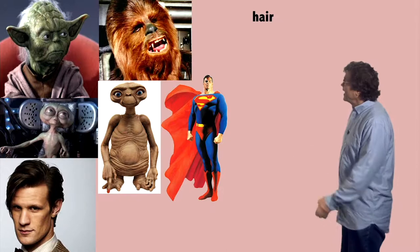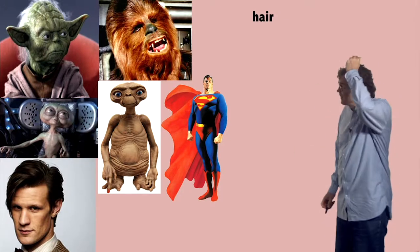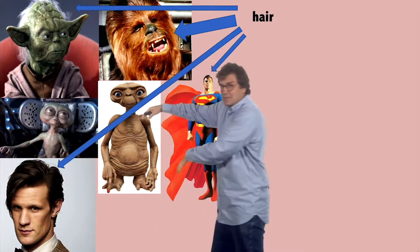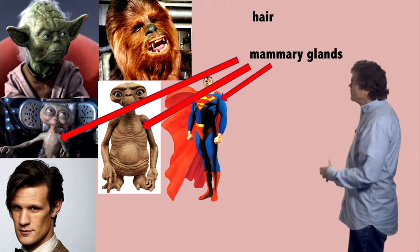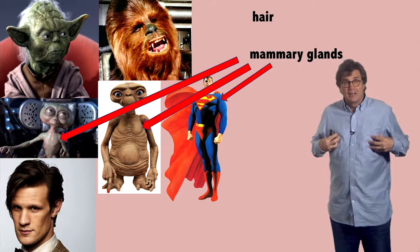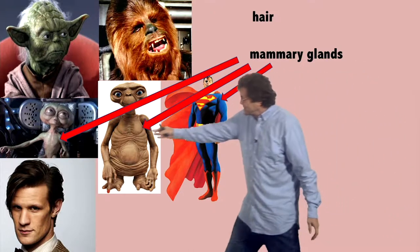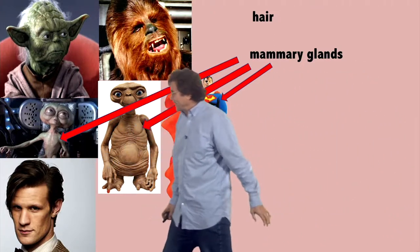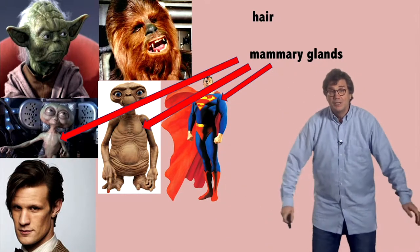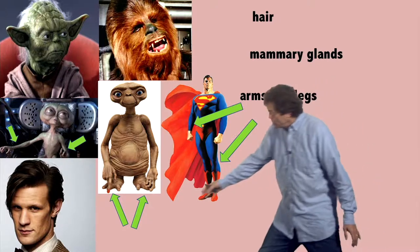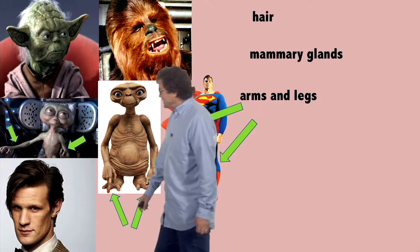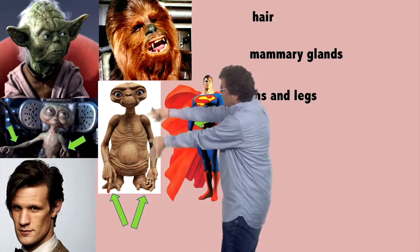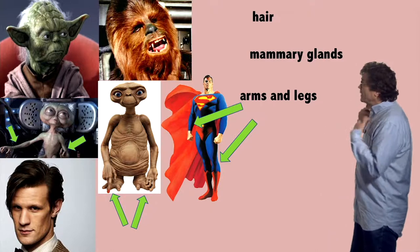Look at this — hair. Superman has hair. Doctor Who has a full head of hair. Look at Chewbacca — he's almost a big ball of hair. And even Yoda has some hair coming out the top. What about mammary glands? You and I have mammary glands, and Superman has mammary glands. E.T. — mammary glands. The Emperor has mammary glands. And these other things — arms and legs. Superman has arms and legs. E.T. has arms and legs — the arms come all the way down to the ground. And the Emperor has arms too. All of those critters have arms and legs and mammary glands and hair.